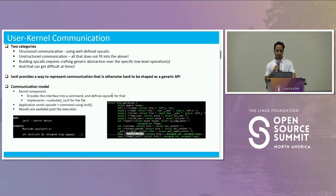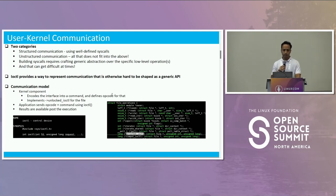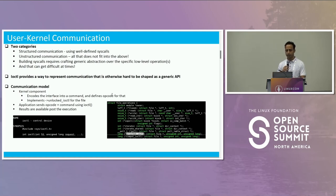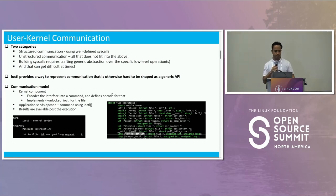If you look at the communication at the kernel level, you start with encoding your interface into a command. You define an opcode for that, which is just a number. Your kernel component is supposed to implement something called unlocked_ioctl callback, which you can see on the right-hand side. Whatever you do inside it, that's going to be your command-specific operation.